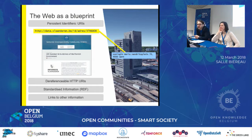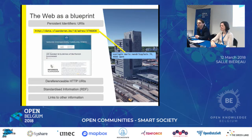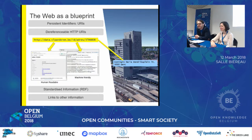At the level of Flemish government, we are already publishing data using persistent identifiers, so-called URIs, which look like a URL. Those are stable identifiers which identify things on the web — in this case, an address such as Koningin Maria-Hendrikaplein number 7 in Ghent. We use a strategy to create cool and stable URIs.